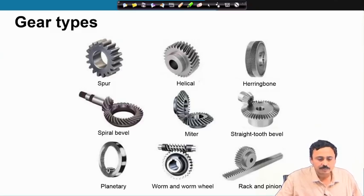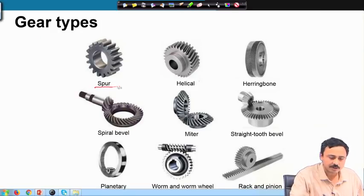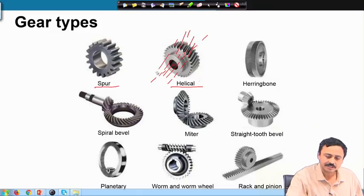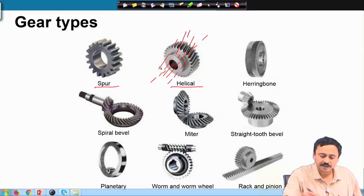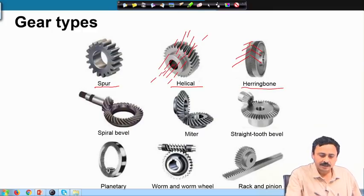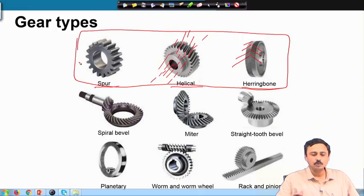Here are some pictures of typical gears. This is called the straight tooth spur gear; this is the helical tooth gear. If this is the gear axis, then the teeth are on helixes centered around the centerline of the shaft — these are helical gears. A double helical gear is a herringbone gear: two helical gears put together. This set of gears is used to connect two parallel shafts.